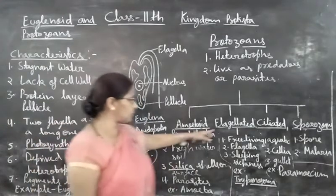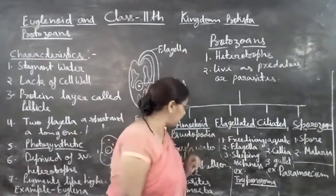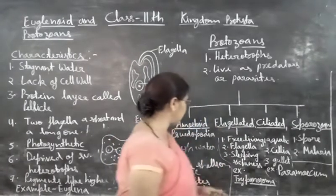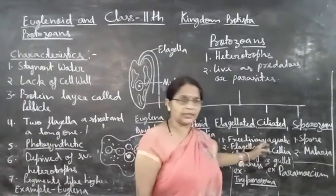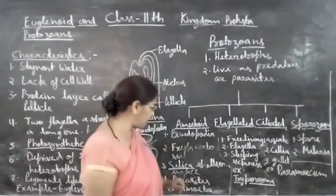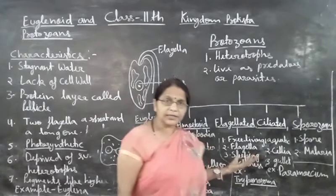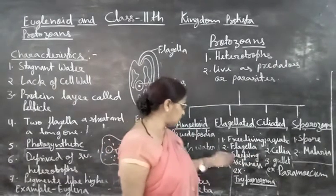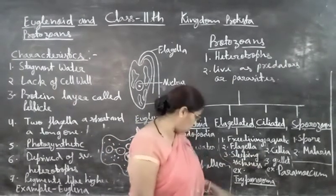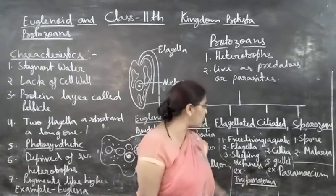Next is flagellated protozoans. Flagellated organisms consist of flagella. They cause a very serious disease known as sleeping sickness. The causal organism is Trypanosoma.